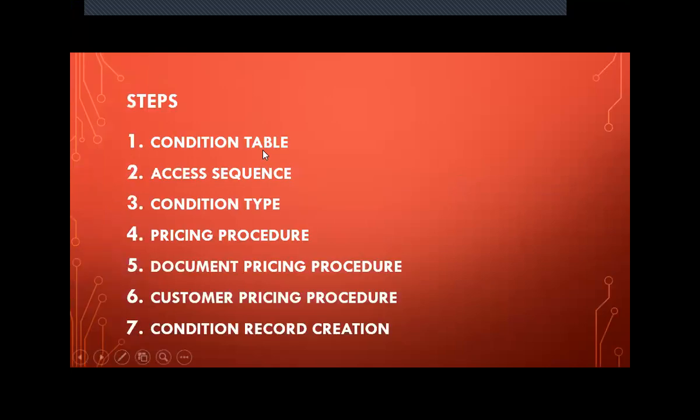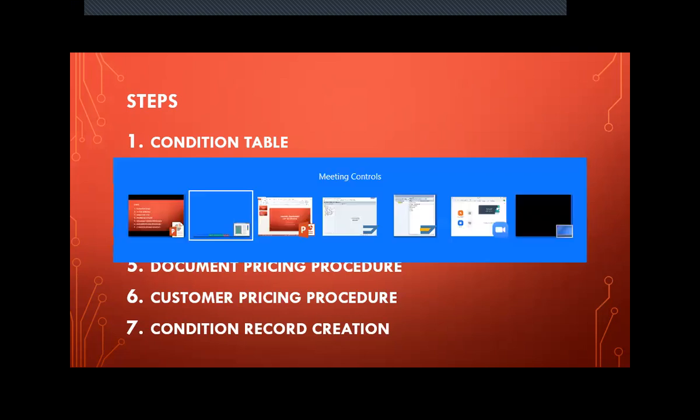First step is condition table — we have to create a condition table. Second step is access sequence. Third step is condition type. Fourth step is pricing procedure. Fifth step is document pricing procedure. Sixth step is customer pricing procedure. Seventh step is condition record creation. I am going to show that one by one in the live system.